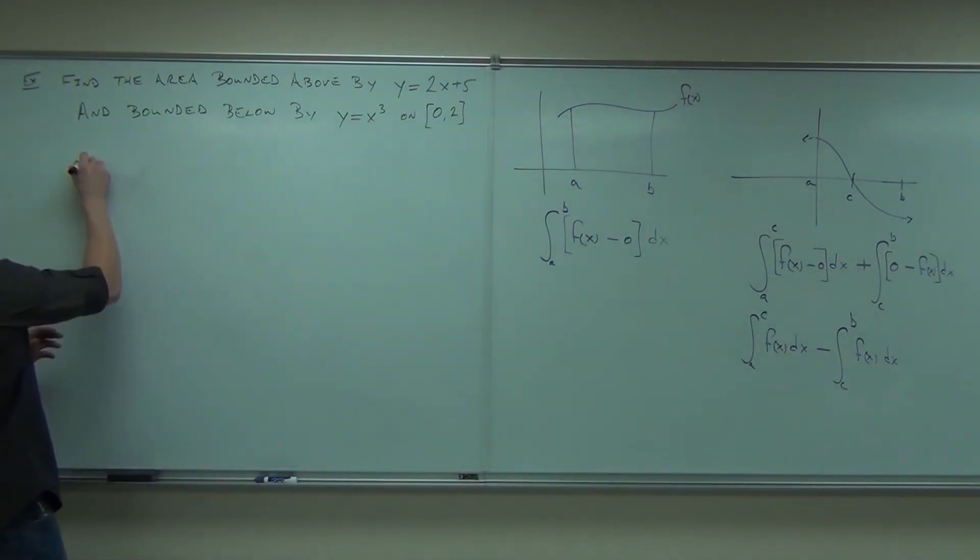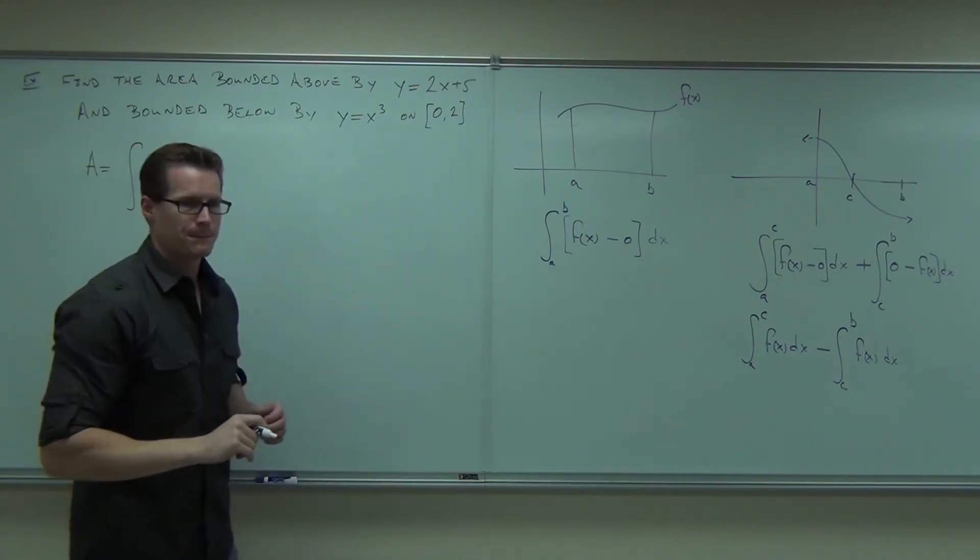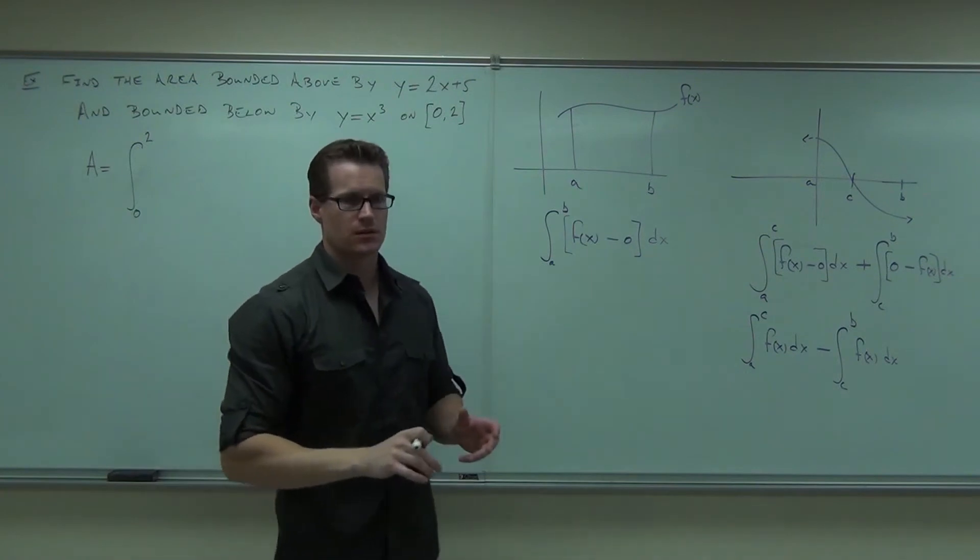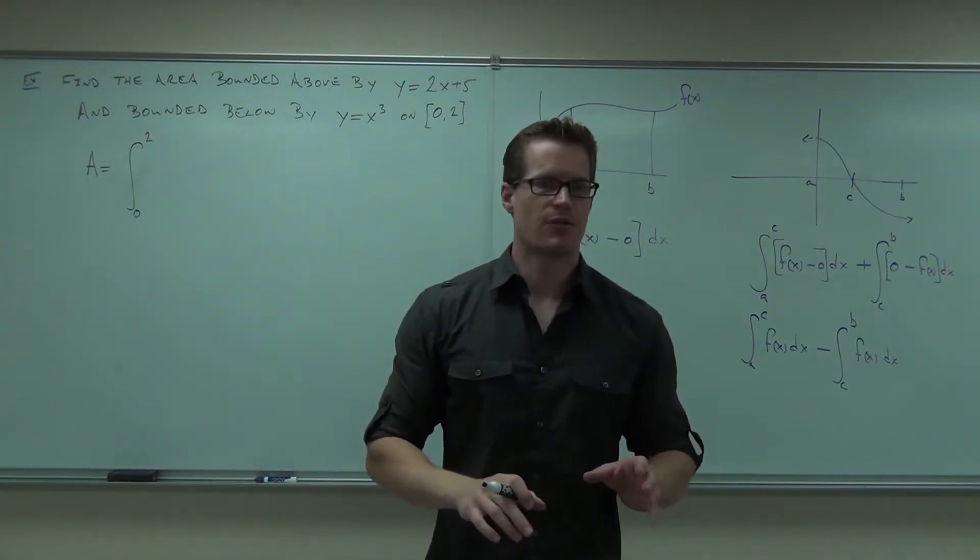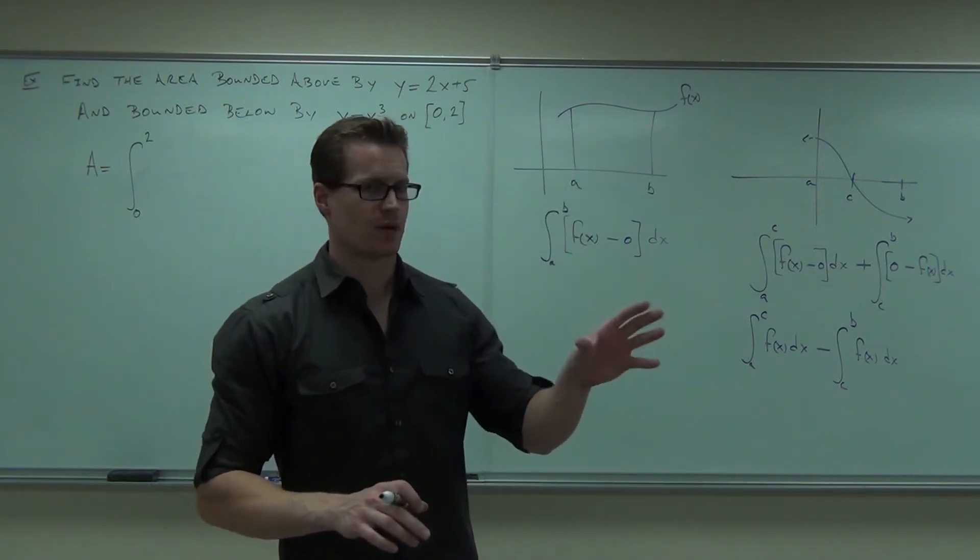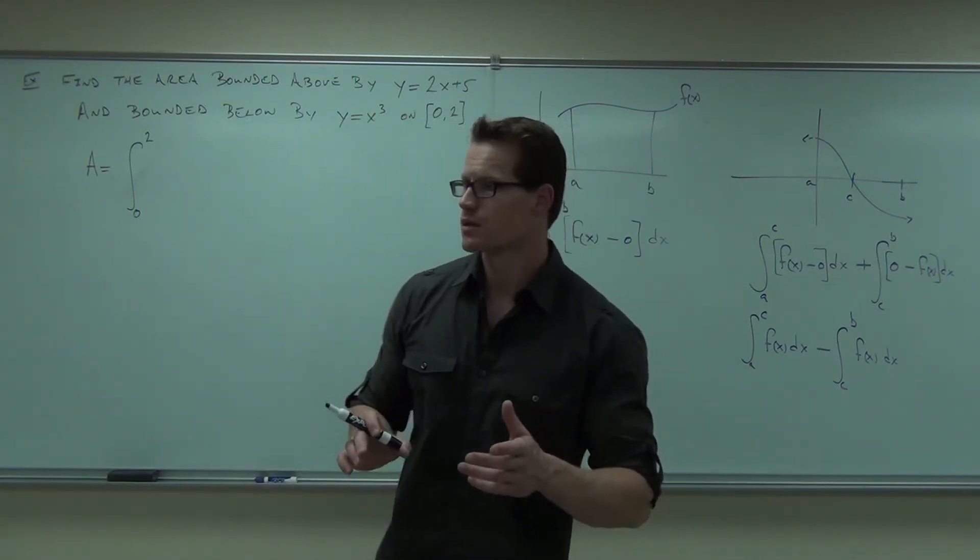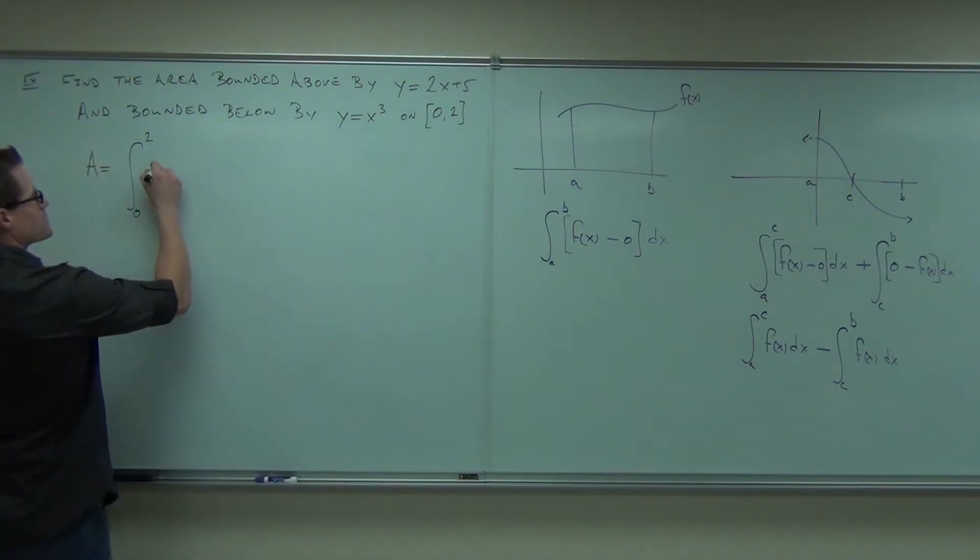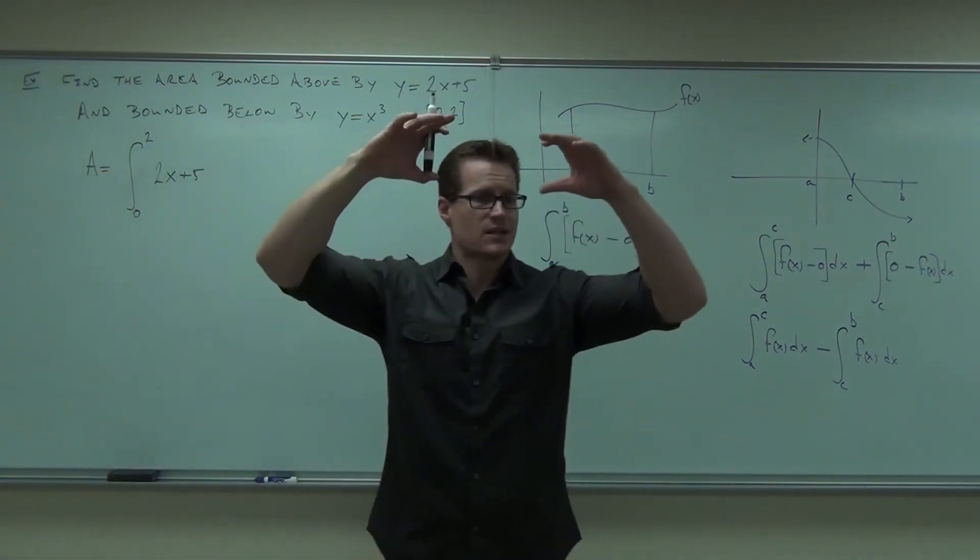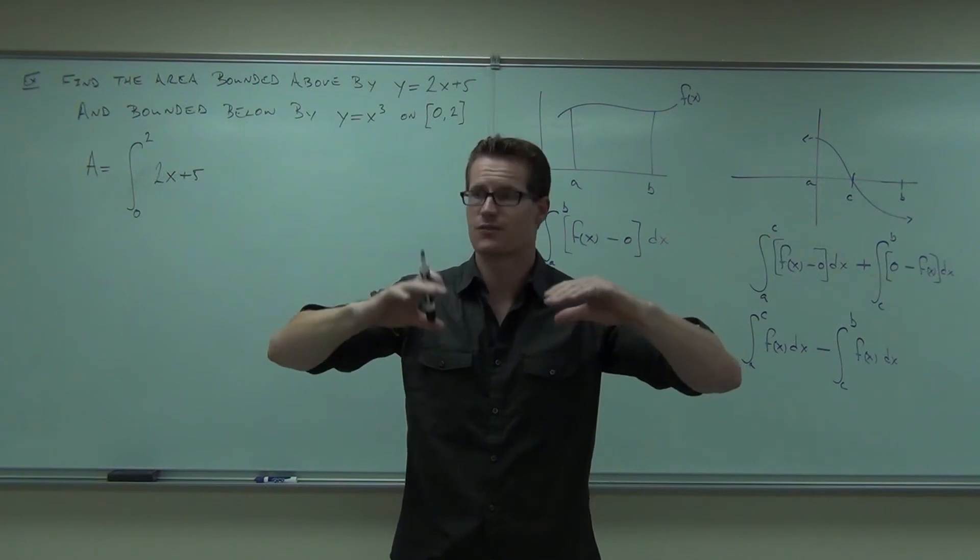So area between two curves says, hey, where do you start? Zero. Where are you in? What function is on the top? When it says bounded above, it means for the whole interval. When it says bounded below, it means for the whole interval. If it doesn't say bounded above or below, we would find those regions. So bounded above by 2x plus 5. Do I add or subtract? Subtract. Yeah, you're subtracting. Remember, you're basically taking big area minus small area to find the area between them.